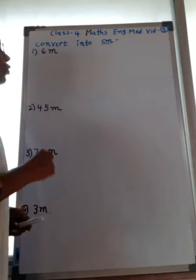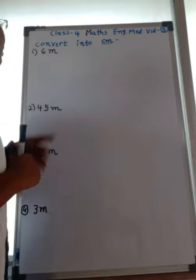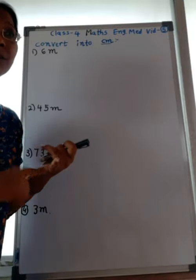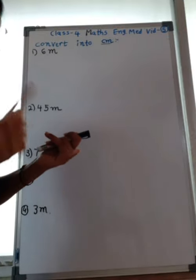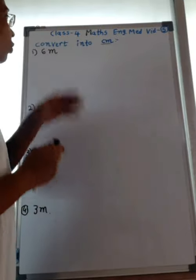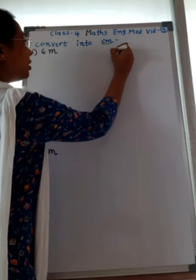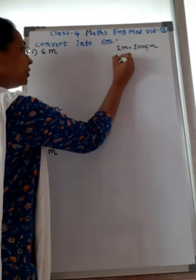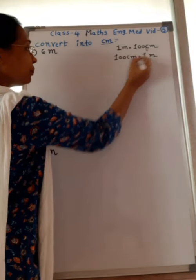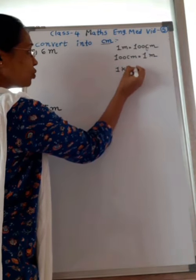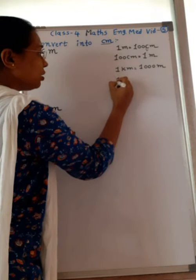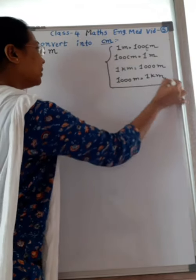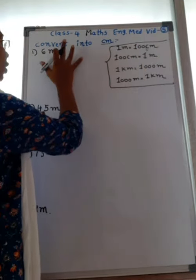Hello my dear students, class 4, maths, English medium, video number 5. Today we will see: convert meter into centimeter, convert centimeter into meter, convert kilometer into meter, and convert meter into kilometer. We know that 1 meter equals 100 centimeter, and 100 centimeter equals 1 meter. Also, 1 kilometer equals 1,000 meter and 1,000 meter equals 1 kilometer. We will use these formulas to solve these sums.